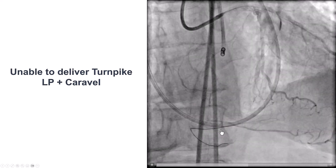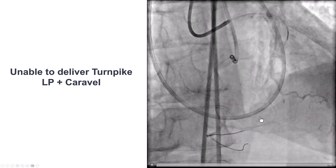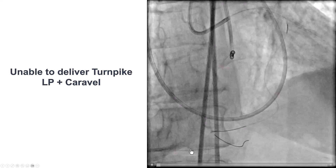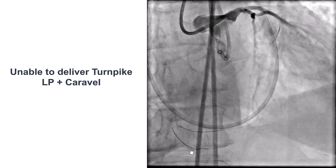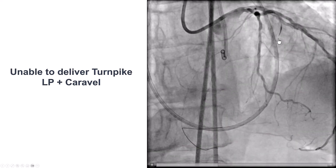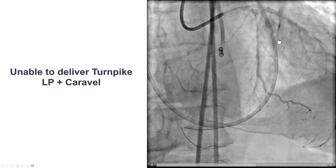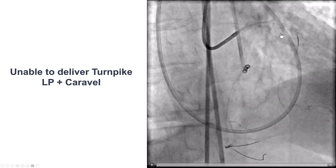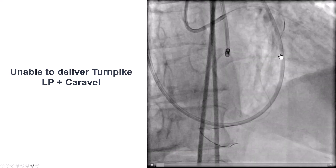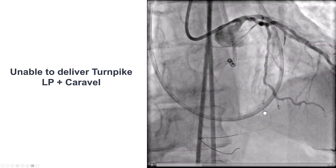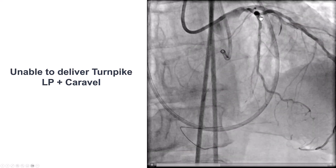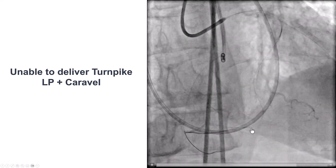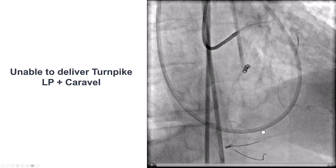Sure enough, our guide wire is through this collateral into the so-called second septal and close to the distal cap. The problem we had — not uncommon when going through small septal collaterals — was that we were unable to deliver the microcatheter. The Turnpike LP would not go. We switched to a Caravel and put in a 6 French guideliner, but still were unable to cross through this lesion.